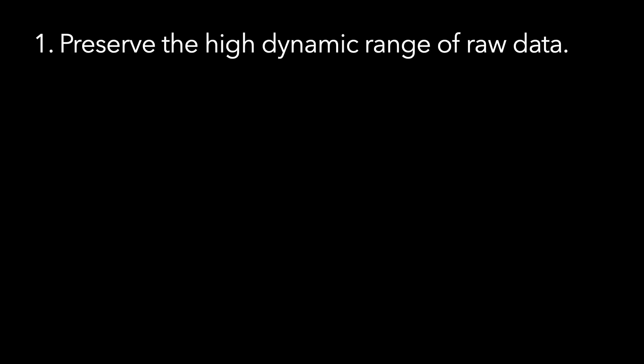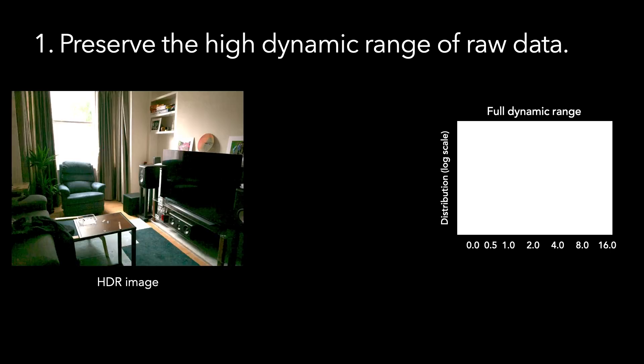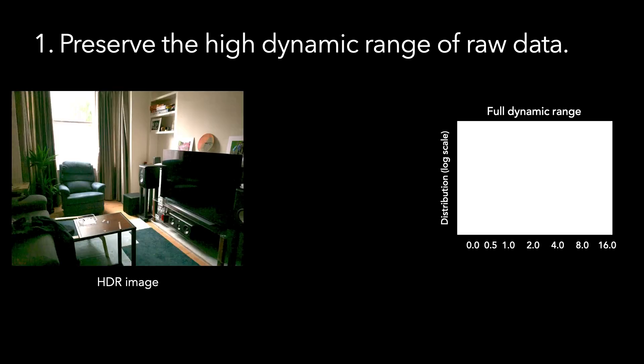What does it mean to recover high dynamic range in NeRF? Here's an example of a single high dynamic range image. I'm showing it at two different exposure levels, one 24 times brighter than the other. In the dimmer exposure, you can clearly see the car through the window, and in the brighter exposure, much more detail is revealed in the interior of the room.